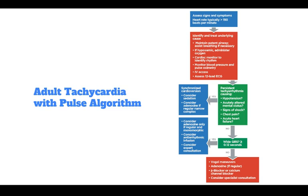If persistent tachycardia is causing hypotension, acutely altered mental status, signs of shock, chest pain, or acute heart failure, perform synchronized cardioversion, considering sedation and considering adenosine if the rhythm is regular and narrow. If those symptoms are not present, determine if the QRS is wide — greater than or equal to 0.12 seconds. If so, consider adenosine only if regular and monomorphic, consider antiarrhythmic infusion, or consider expert consultation. If not wide, perform vagal maneuvers, administer adenosine if regular, use beta blockers or calcium channel blockers, or consider specialist consultation.